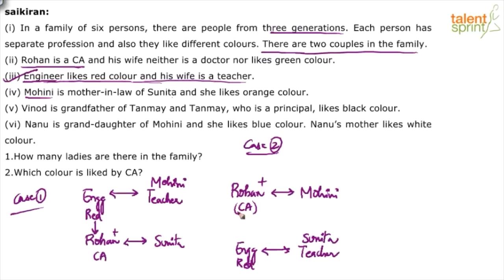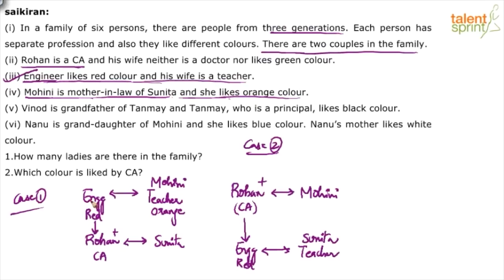In Case 2, Mohini is the wife of Rohan and mother-in-law of Sunita, so Sunita is the teacher. One of these two cases must be correct. Mohini likes orange color — that's clear. According to Case 1, Mohini's profession is teacher; according to Case 2, Mohini's profession is not yet known. Point four is now used.